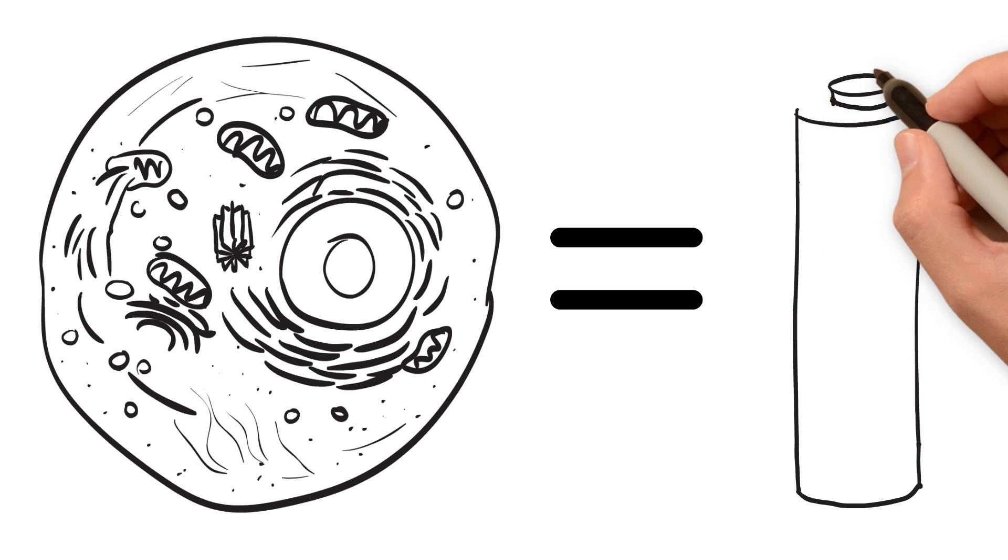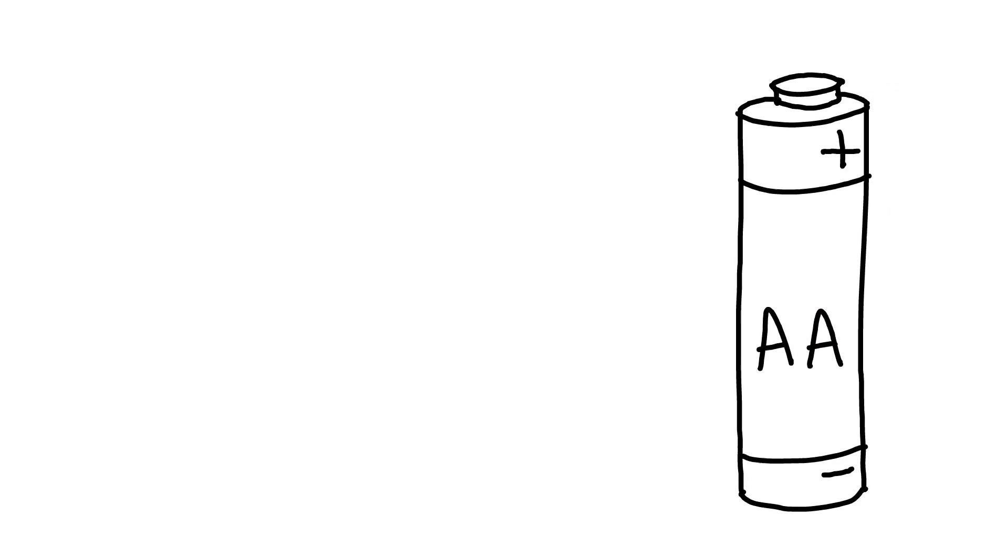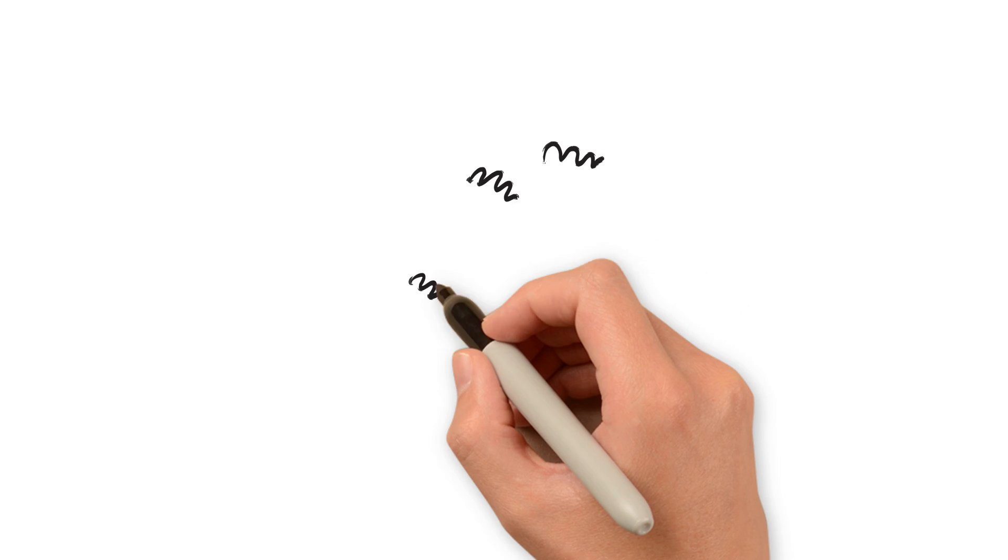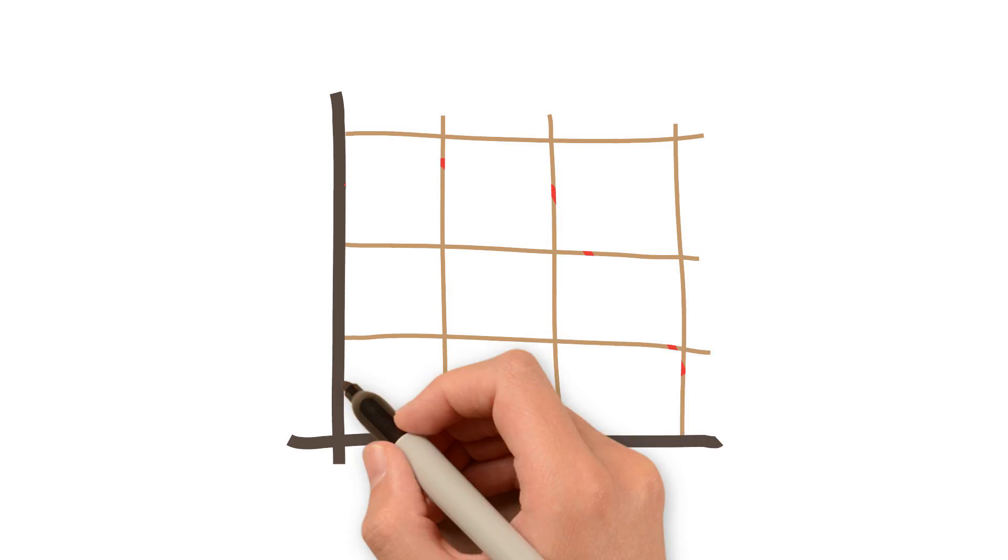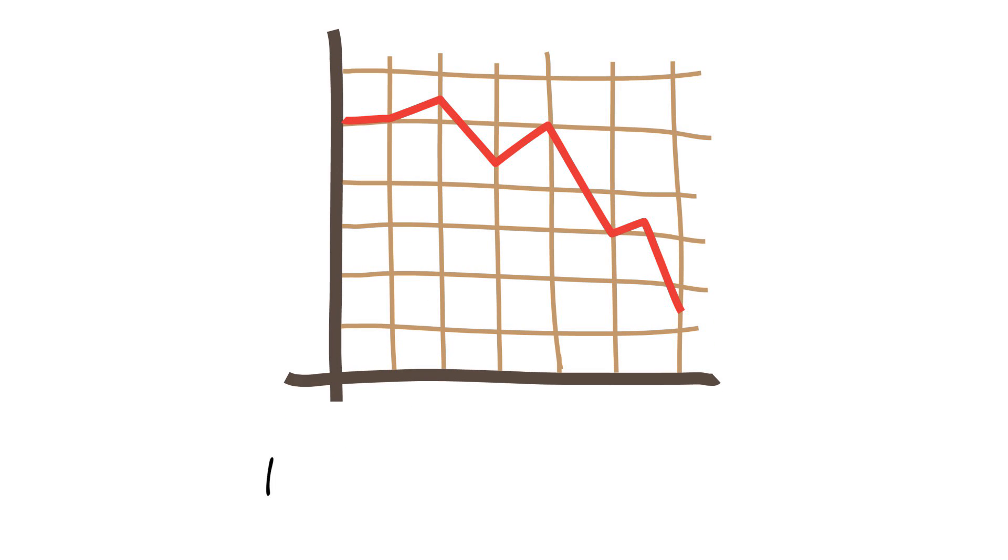Healthy cell membranes act as capacitors in the human body, storing energy or voltage. When the cell membrane is not functioning due to illness or malnutrition, the ability of the cell to store this energy is diminished, and this is picked up as a lower Phase Angle value.